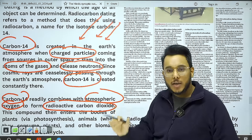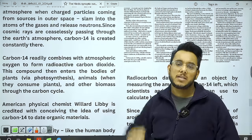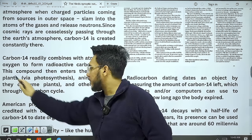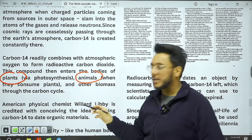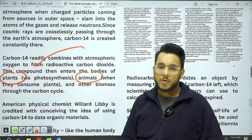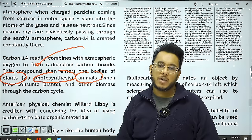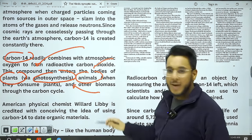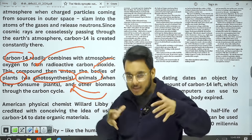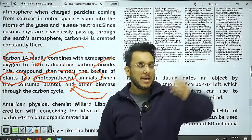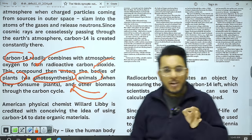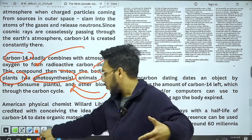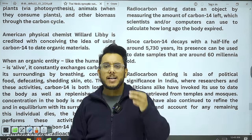Plants constantly consume carbon dioxide through photosynthesis, so they also consume Carbon-14. Animals and humans consume Carbon-14 through the food they eat — plants or other biomass containing carbon. Carbon-14 in a living organism's body gets lost through defecation and degradation, but it is constantly being replenished. So throughout the life of a plant or animal, a constant amount of C-14 is maintained in the body.